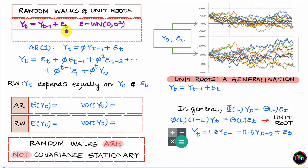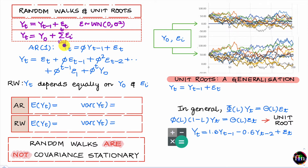This is one way of writing the process specification for a random walk. An alternative way is to write it in terms of the initial value y_0 — the value at time t=0 — plus the sum of all shocks experienced from i=1 all the way to the current period i=t.